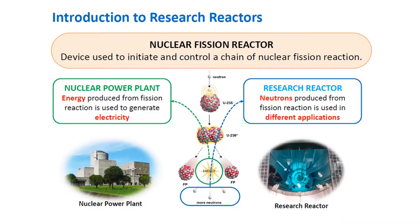Nuclear fission reactors are devices used to initiate and control a chain of nuclear fission reactions. As a quick review, when a stray neutron hits a heavy nucleus like uranium-235, this neutron is absorbed, creating an unstable nucleus — uranium-236 — which then splits into fission fragments, producing energy and more neutrons. This energy is used by nuclear power plants to generate electricity, while the neutrons produced are used by research reactors in different applications.